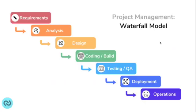The waterfall model I typically see in a healthcare IT space does contain seven phases. The additional phase that gets added is the deployment or implementation phase. In the original document, there wasn't a separate phase for deployment — it went straight from testing to operations. In healthcare, IT projects have such a huge impact on workflow, with significant cutover activity and a warranty period, which is why the seventh phase is added.